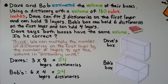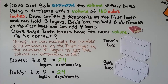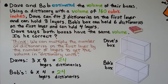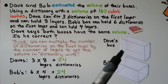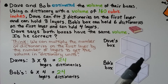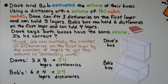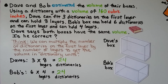Dave and Bob estimated the volume of their boxes using a dictionary with a volume of 160 cubic inches. Dave's box can fit 3 dictionaries on the first layer and can hold 8 layers. Bob's box can hold 6 dictionaries on the first layer and can hold 4 layers. Dave says both boxes have the same volume — is he correct?